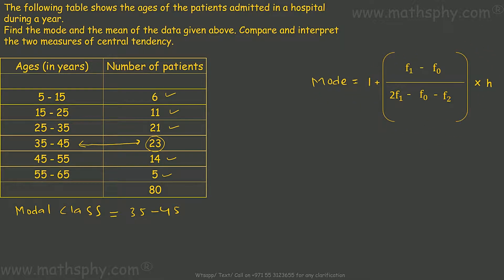We have these many inputs to feed. We have L, which we call lower limit. We have H, which is called class size. Then we have F₀, F₁, and F₂ - three more inputs to feed.